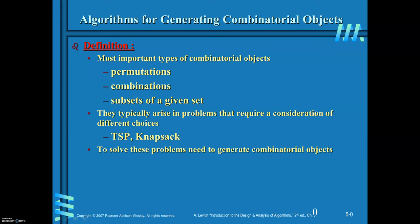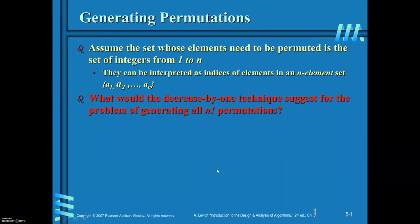Algorithms for generating combinatorial objects — the most important types being permutations, combinations, and subsets of a given set. When you solve the Traveling Salesman Problem and Knapsack Problem using brute force, you generate all n-1 permutations for TSP and all possible subsets of n items for Knapsack. Assume a set containing n elements: a1, a2, ... an.